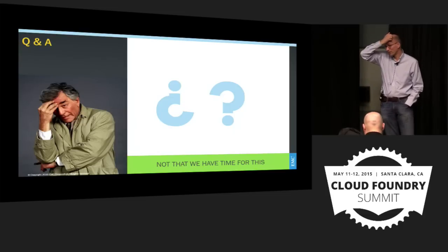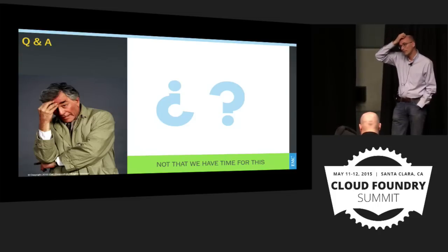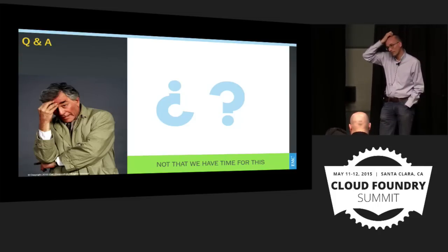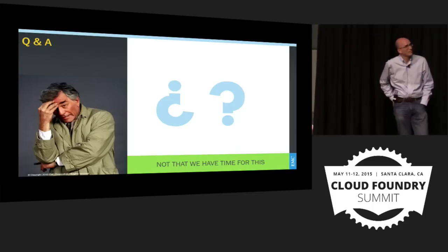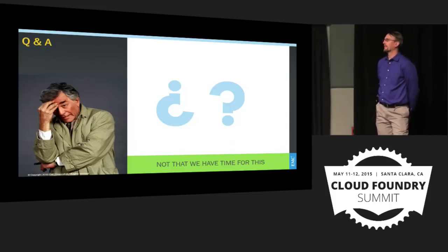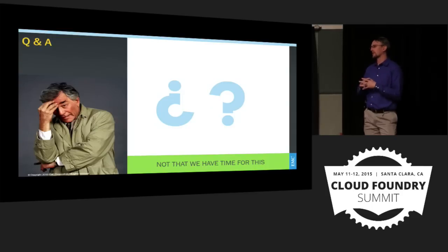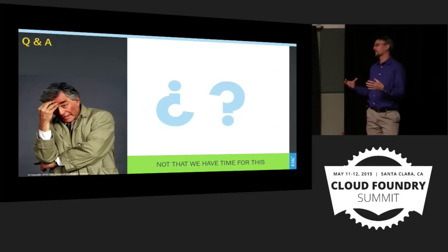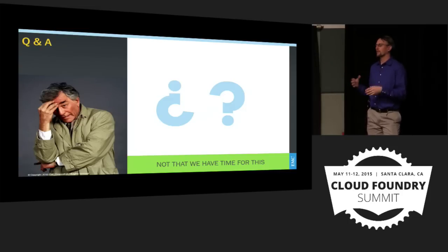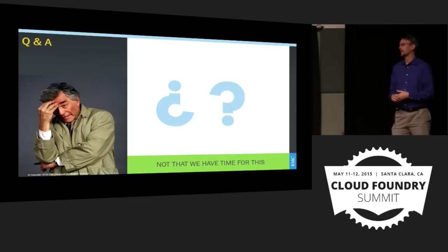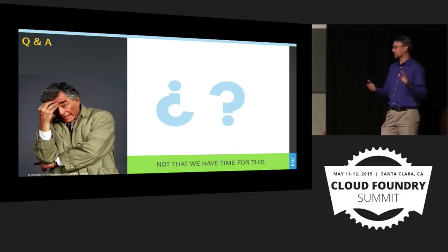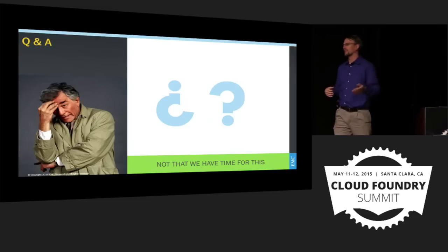Q: Do you do continuous resiliency testing, chaos monkey style? We don't do anything like that today — we've thought it was a good idea but haven't had the bandwidth to add it. Our pre-prod environment mimics production and would be the natural playground for that kind of testing without affecting production. We could monitor it just like production, run experiments freely, and developers can actually log in there to fix or investigate problems in real time — whereas in the production environment, because of EMC security rules and regulatory requirements, developers cannot log in directly.